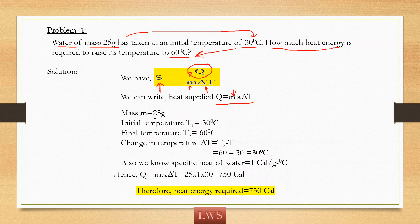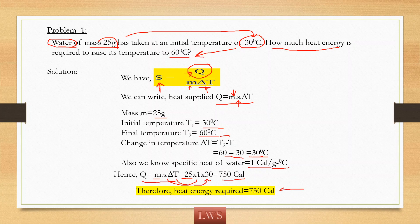Mass M is 25 grams. Specific HEAT S — since we are considering water, we use the specific HEAT value of water, which is 1 calorie per gram degree Celsius in CGS. Delta T is the change in temperature: final minus initial, that is 60 minus 30, giving 30 degrees. So Q equals 25 times 1 times 30, giving 750 calories of heat energy. This means for 25 grams of water at initial temperature 30 degree Celsius, supplying 750 calories raises its temperature to 60 degree Celsius.